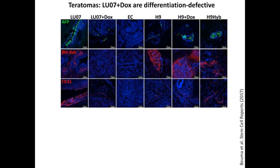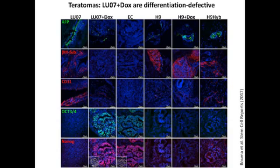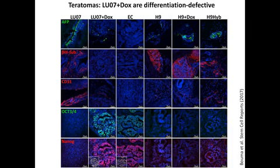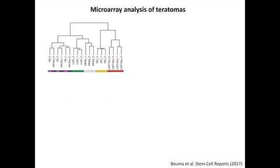We then asked whether cells expressing pluripotency markers were still present. The fully differentiated teratomas were lacking undifferentiated cells, whereas the ECs and the IMC07 plus dox teratomas still contained high numbers of cells expressing OCT3/4 (in green) and NANOG (in red). We then analyzed teratomas by microarray based on global gene expression, and two groups emerged: the differentiated teratomas on the left, and a second group on the right containing the undifferentiated ECs and the IMC07 plus dox teratomas.